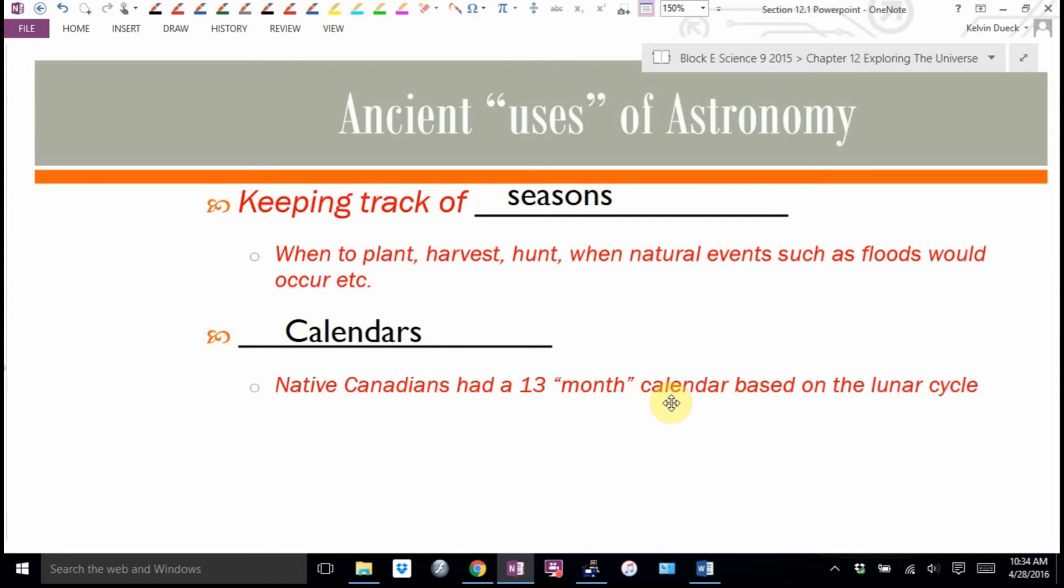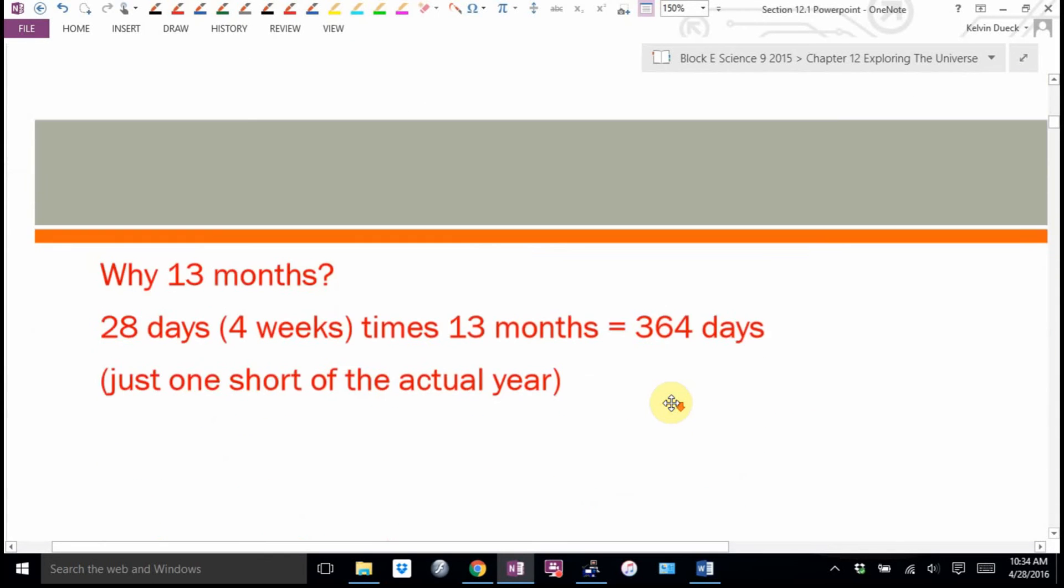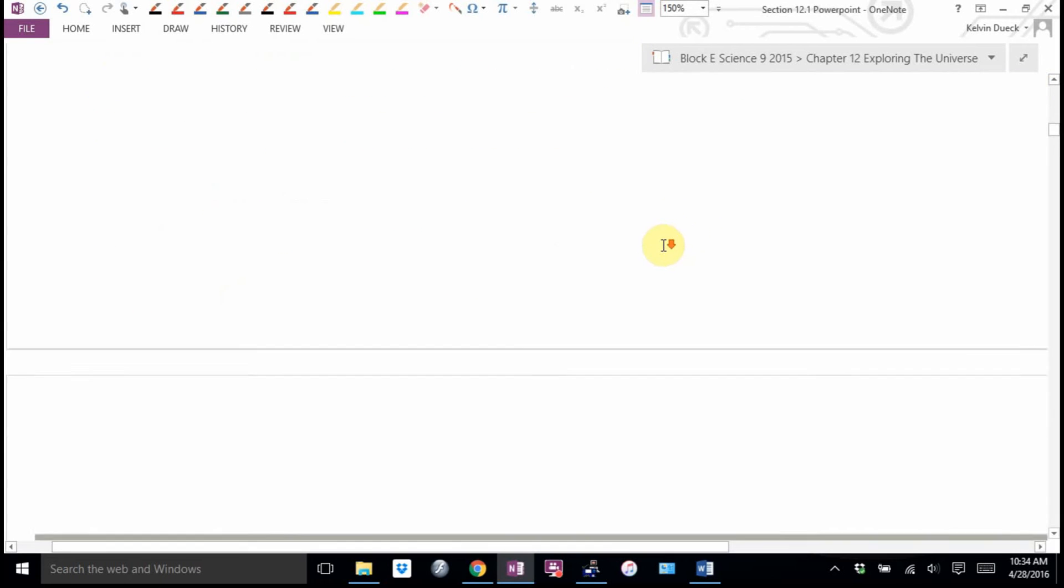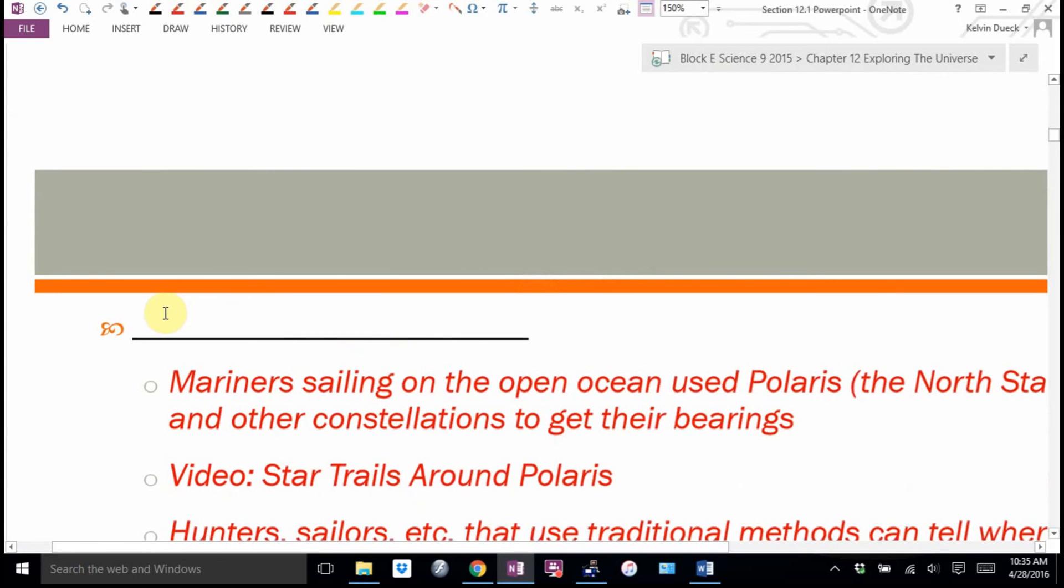So why 13 months, 28 days, 4 weeks, times 13 months is 364 days, just one short of the actual year? Makes way more sense to me. But that's never going to change. We're stuck with it. What else did they use astronomy for? Navigation.